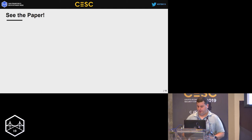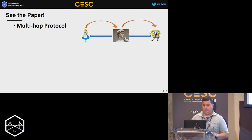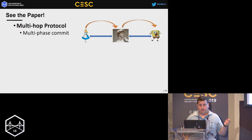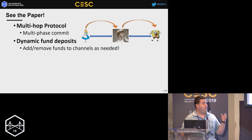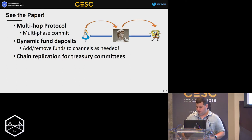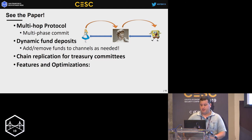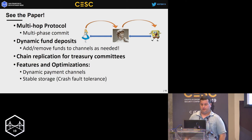I want to refer you to the full paper for some things I won't have time to cover. It's a multi-hop protocol using a variation of multi-phase commit, since we can't use the blockchain as a synchronization mechanism like the Lightning Network does. We also have dynamic fund deposits, allowing adding or removing funds from a channel as needed — unlike the Lightning Network, where you must fund the channel at creation. We use a chain replication variant for committees instead of consensus. We also have dynamic payment channels and stable storage for crash-fault tolerance.